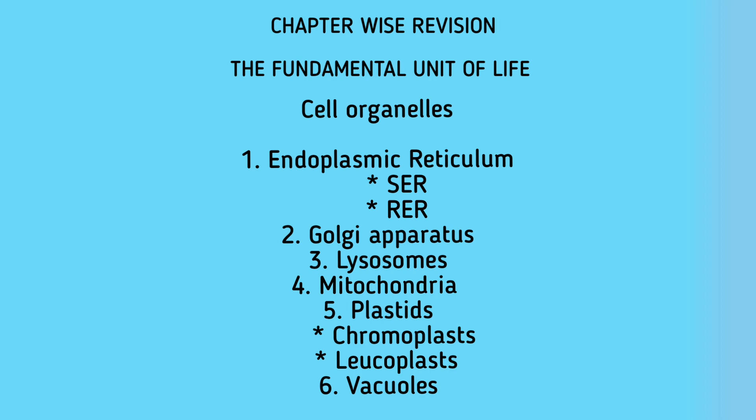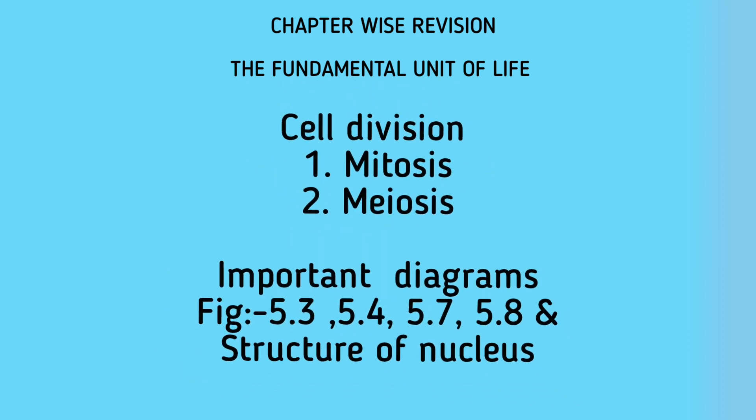Chromoplasts are colored plastids and leukoplasts are colorless plastids with different functions. An example of chromoplast is chloroplast, which consists of chlorophyll, a green pigment that gives color to green leaves. The last cell organelle is the vacuole — storage sacks for solid or liquid contents. In plant cells, vacuoles are full of cell sap and provide turgidity and rigidity to the cell. In amoeba, food vacuoles are present. In some unicellular organisms, specialized vacuoles expel excess water and waste.